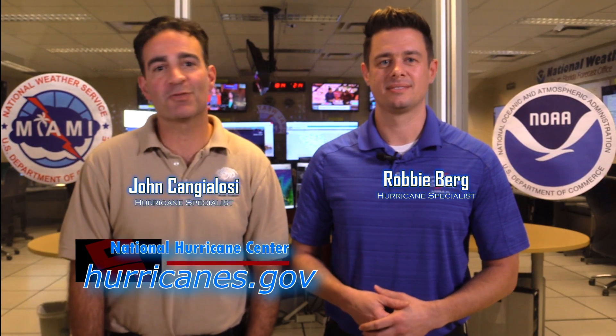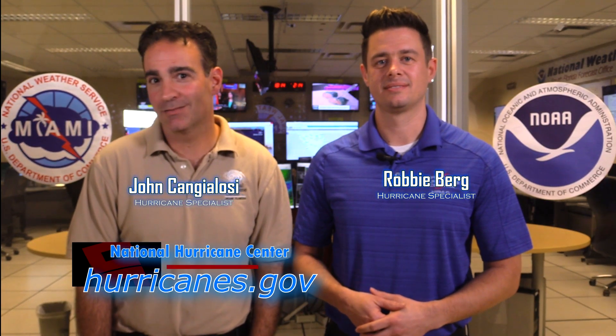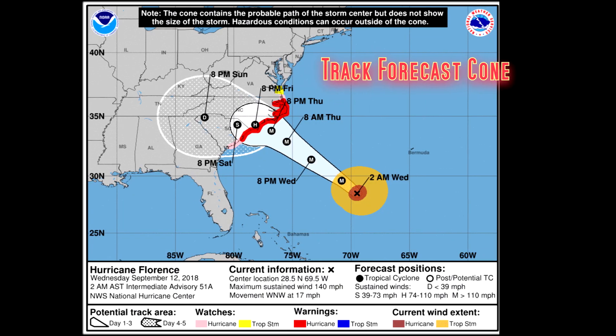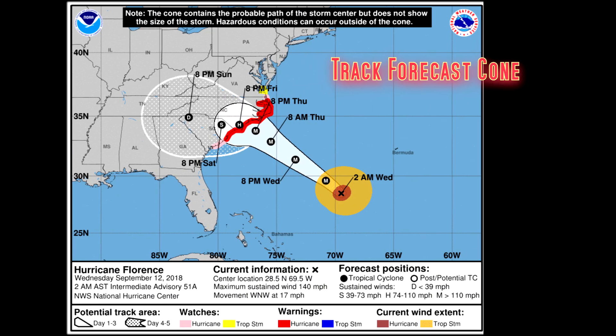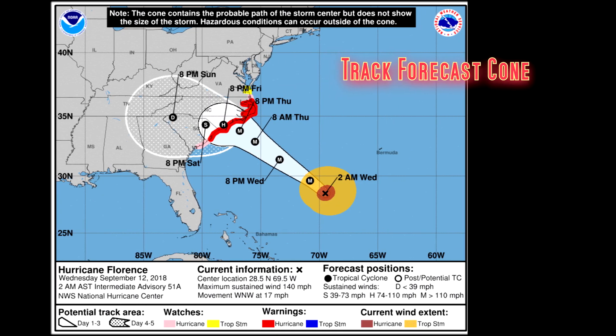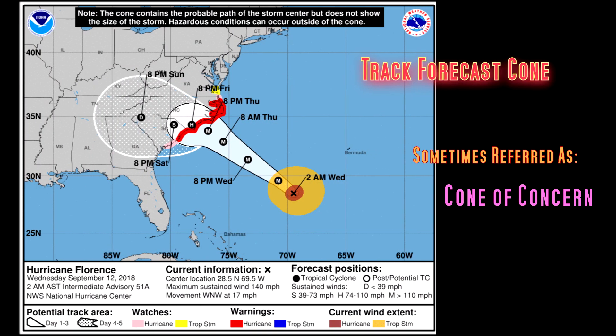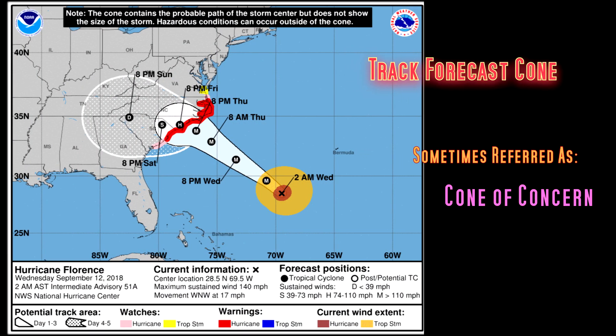Let's say a hurricane is threatening your city. What's the first picture your TV meteorologist might put on the screen? It's probably a hurricane cone showing where the storm may go. Some people affectionately call it the cone of concern or even the cone of death. But all kidding aside, the National Hurricane Center creates a cone to communicate the possibilities of where the storm may go.